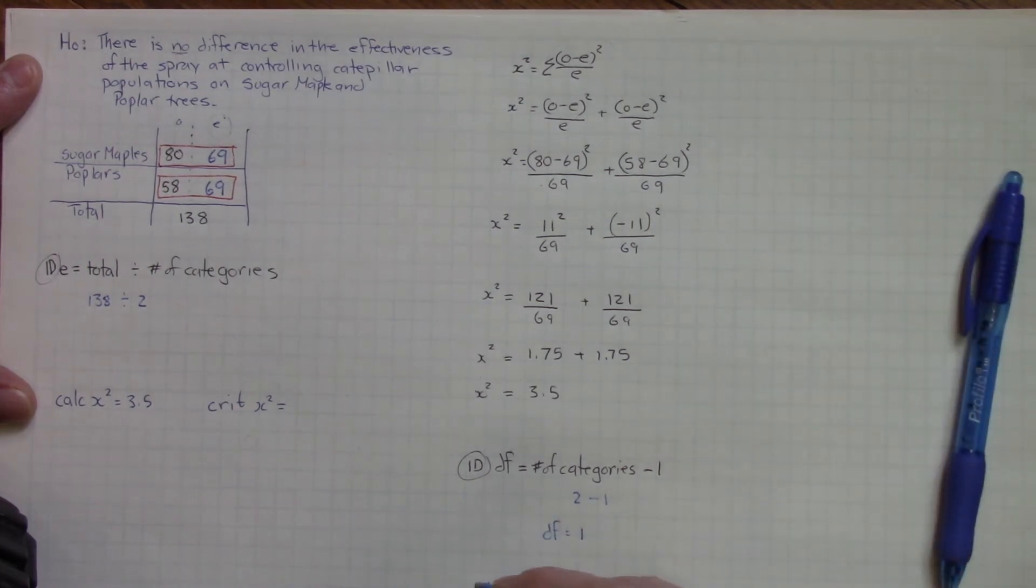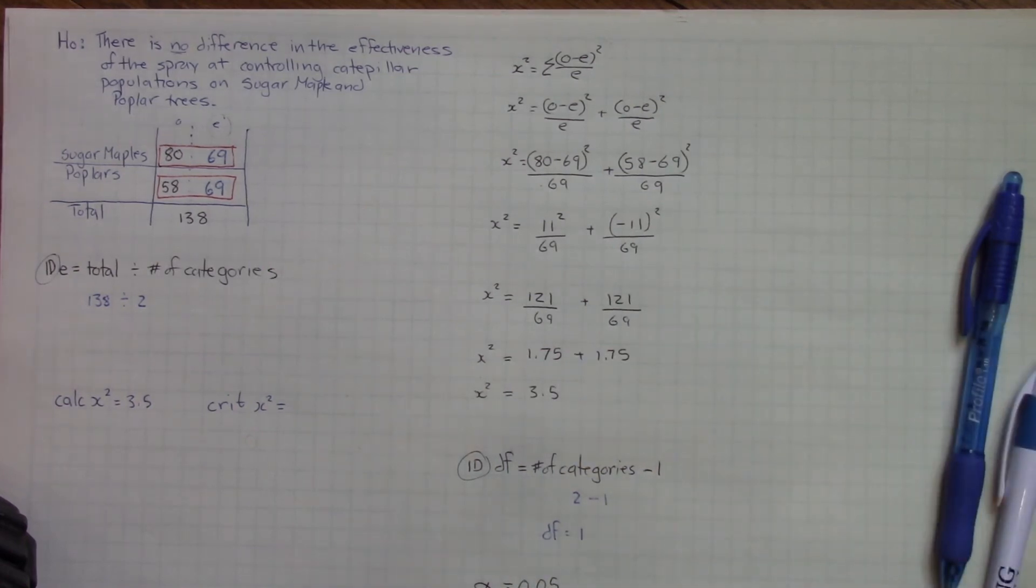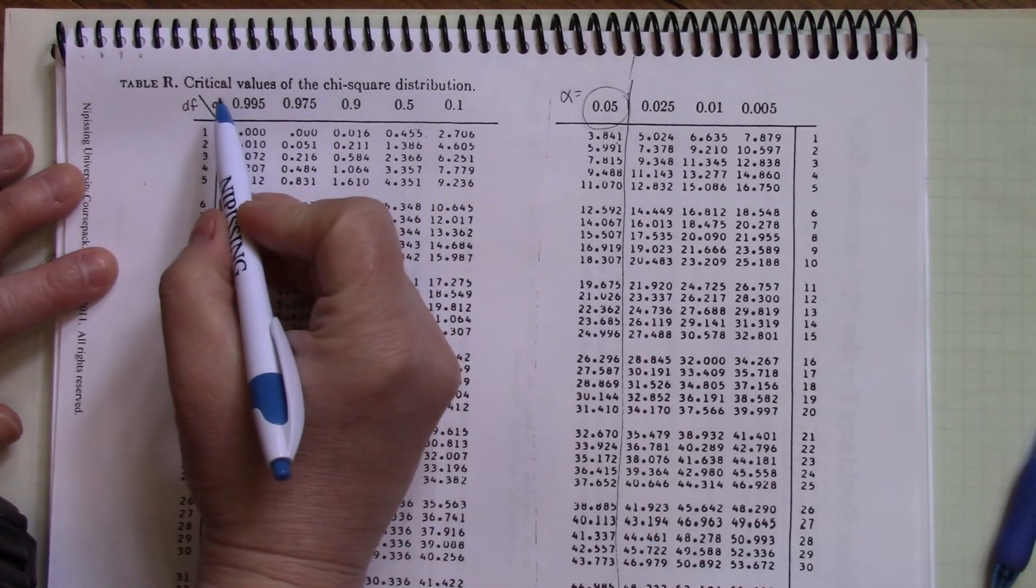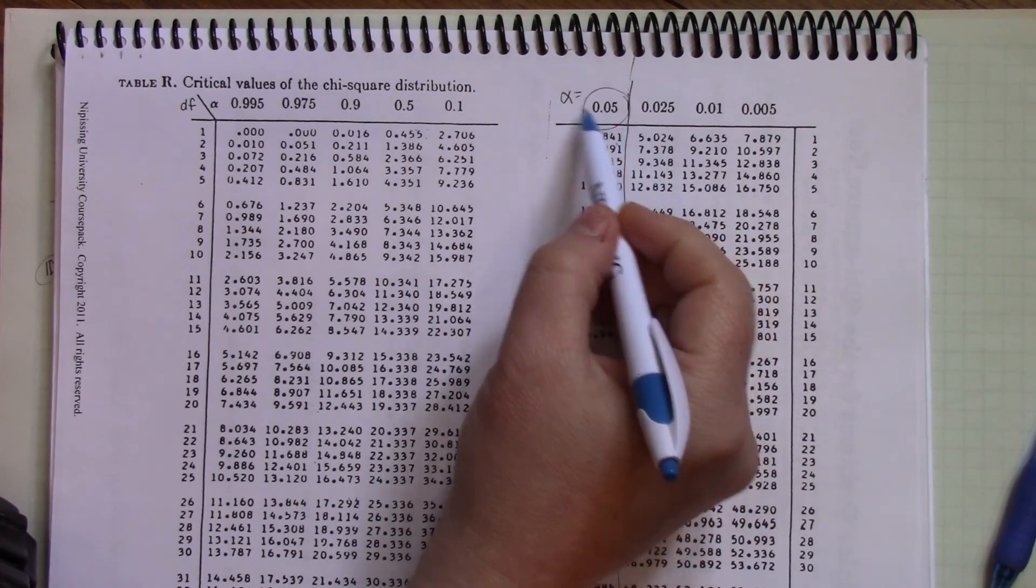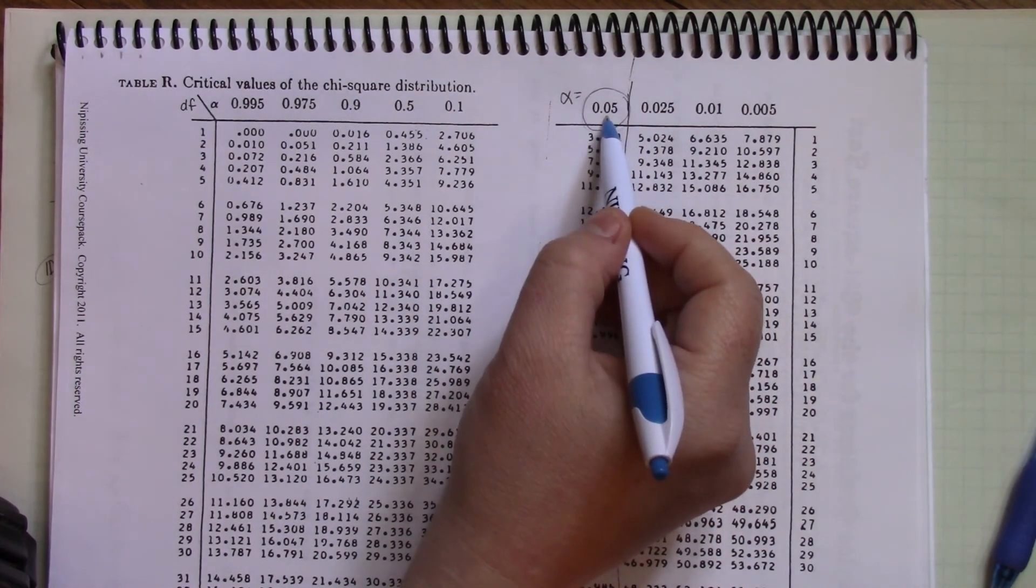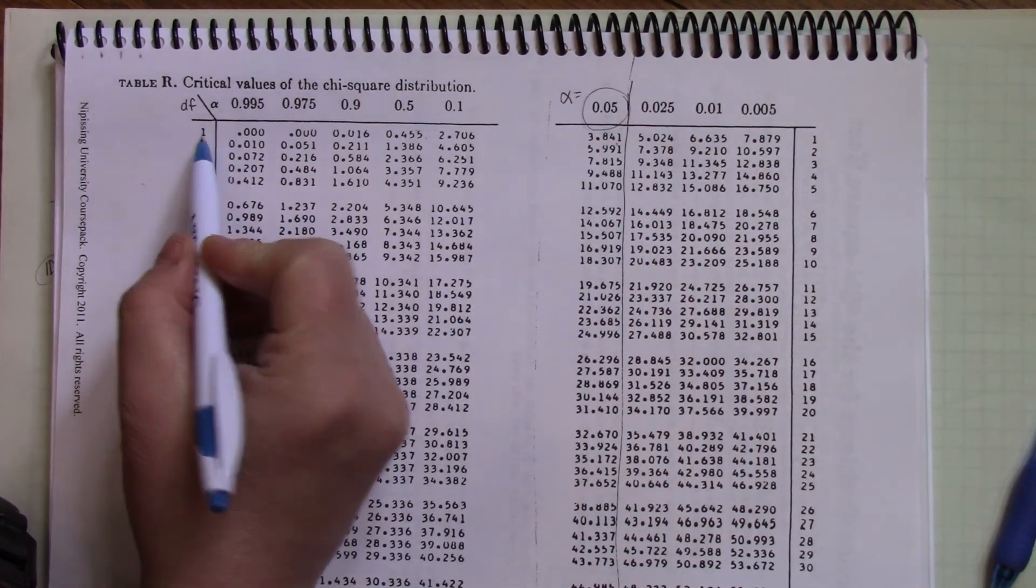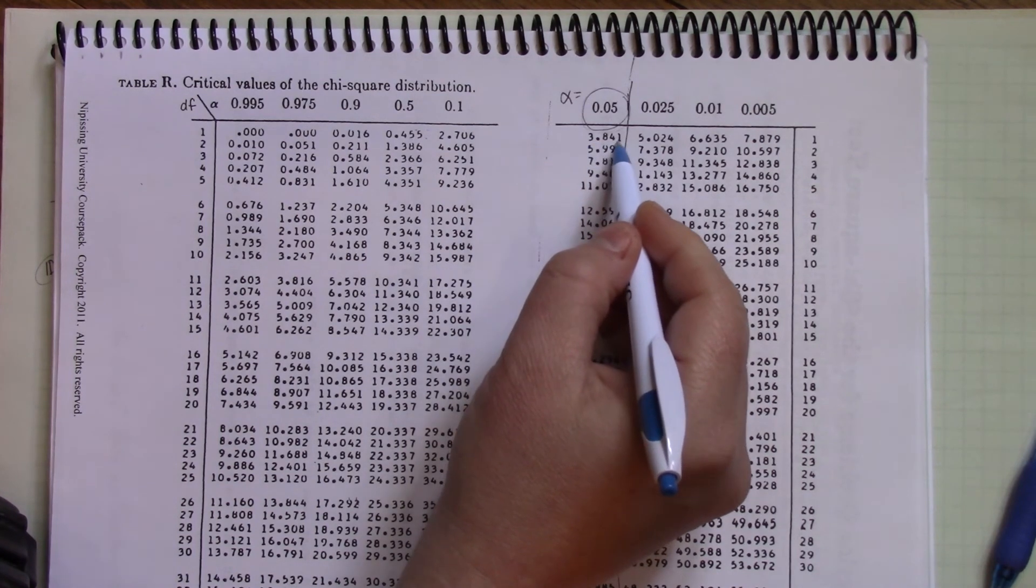The other thing we need to know is alpha, which is always 0.05. That is a standardized number. On our critical table of values, we see our column of alpha of 0.05, and we have a degrees of freedom of 1, so our critical chi-squared is 3.841.